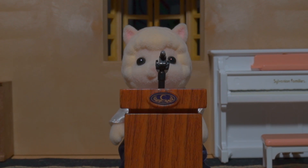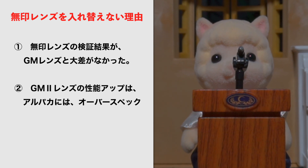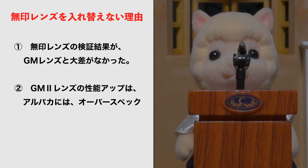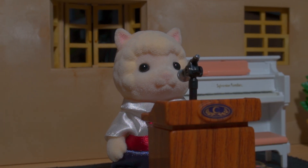検証結果とGMレンズの予想を総合的に考えた結果、アルパカは無印レンズをGMレンズと入れ替えないことに決めました。理由は2つです。1つ目は、無印レンズの検証結果が現行のGMレンズと大差がなかったことです。もう1つは、GMレンズが現行のGMレンズよりも仮に高性能になったとしても、アルパカにとって宝の持ち腐れになると思われたからです。今回の検証はとても有意義でした。それでは皆さん、さよなら、さよなら。